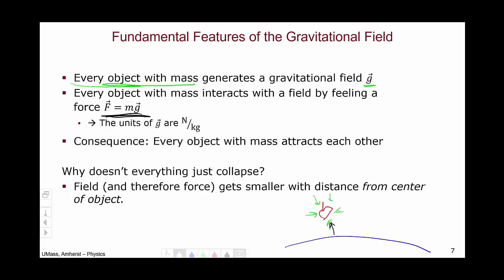We'll talk a little bit more about this particular seeming paradox in class, but it is actually true. So every object interacts with all the other fields by feeling a force, m times g. It's important to keep in mind that objects don't interact with their own field. They only interact with the surrounding fields. We've already talked about the fact that the units of g are Newtons per kilogram, and a consequence of this is that every object in the universe with mass attracts each other.